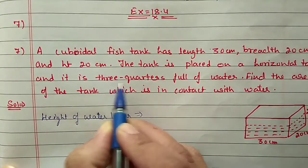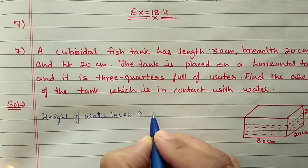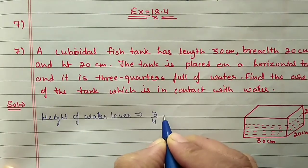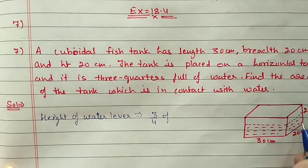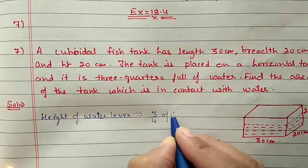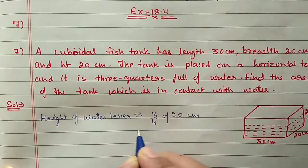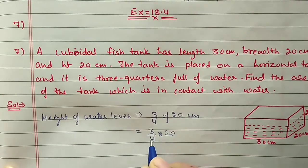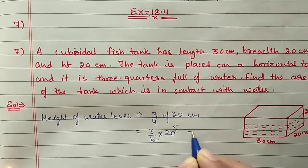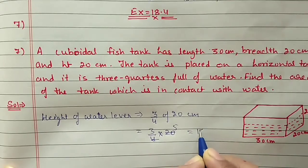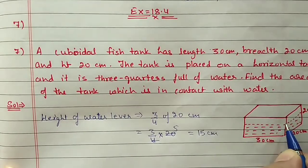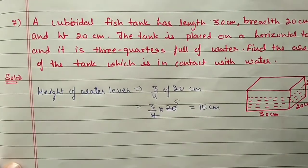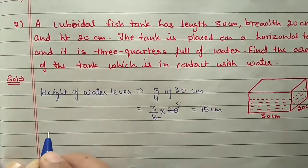The height is three-quarters of the full water height. Three-quarters of 20 cm: we calculate 3/4 into 20, which gives 15 cm. It means the water level is 15 cm. Now we find the area of the tank in water contact.